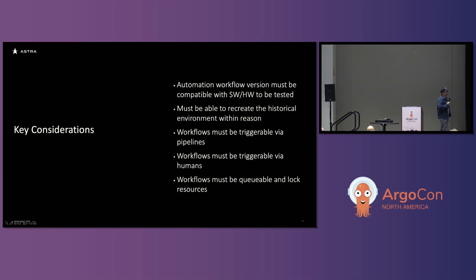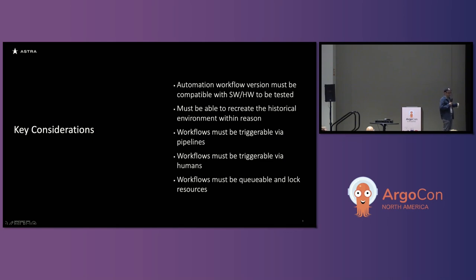We wanted to be able to trigger the hardware-in-the-loop simulations through pipelines — through GitLab or GitHub type pipelines — so that when somebody makes a change to a piece of code, in addition to their unit tests and local integration tests, they can run it on this platform. In the manual world that was hard, because they'd have to coordinate getting time to access the system, figure out how to use it, and get their code deployed. We really wanted it to be as simple as possible from an automation perspective, though it also needs to be triggerable by humans.